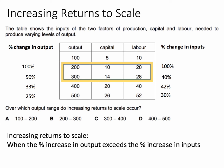We find that it's when we move from output 200 to 300 — that's a 50% increase in output — resulting from a 40% increase in inputs. Capital has gone up from 10 to 14, labour from 20 to 28, which is a 40% increase in inputs, but output has gone up by 50%. So the change in output from 200 to 300 is where increasing returns happens.